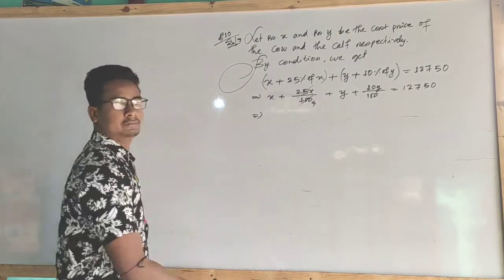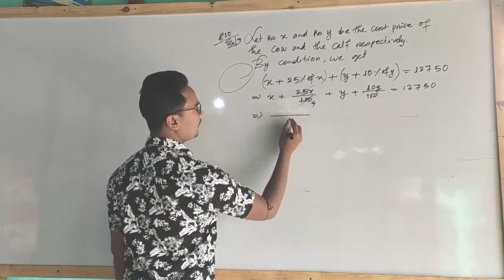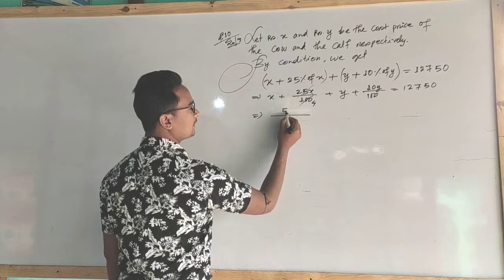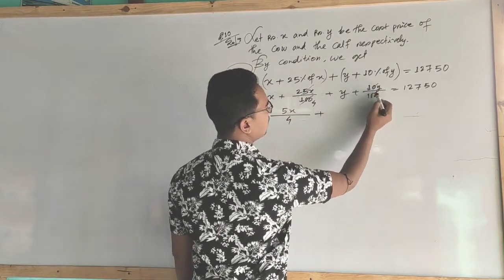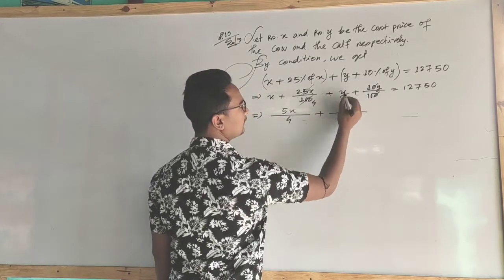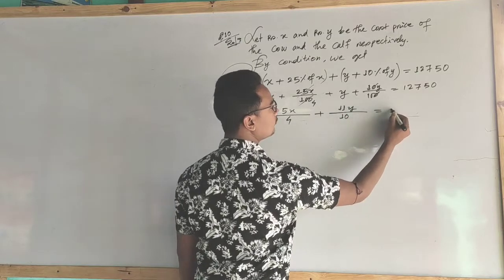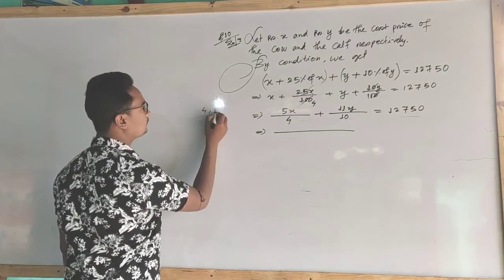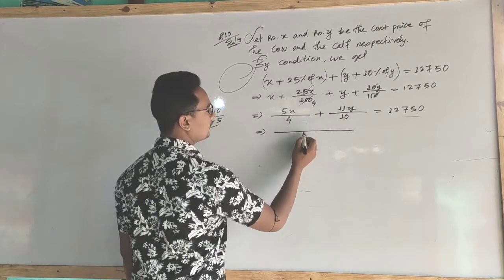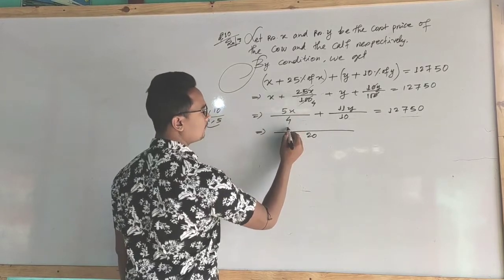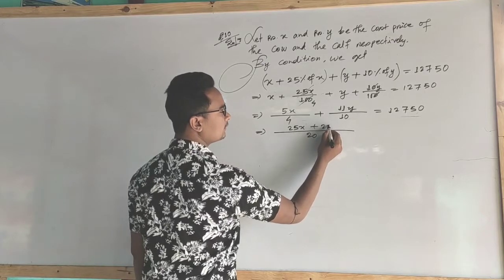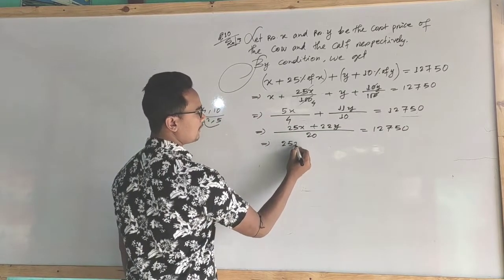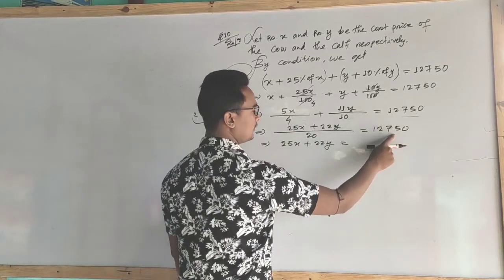Reducing: take LCM 4 — so 4x plus x gives 5x, and similarly 10y plus y gives 11y. So 5x upon 4 plus 11y upon 10 equals 12,750. Multiplying through: 25x plus 22y equals 127,500. This is equation number 1.